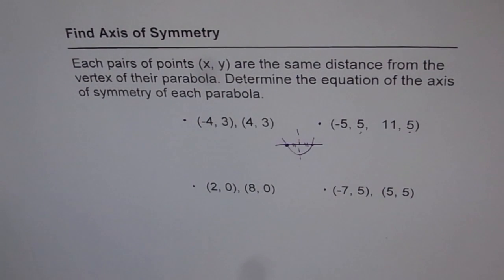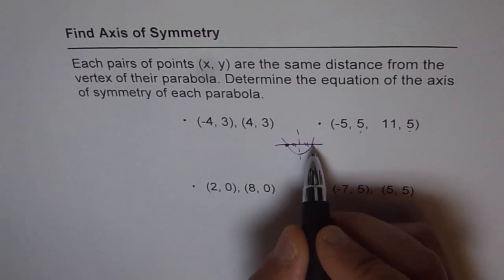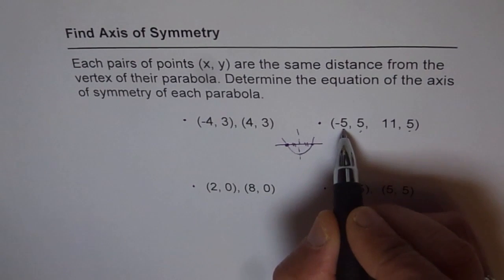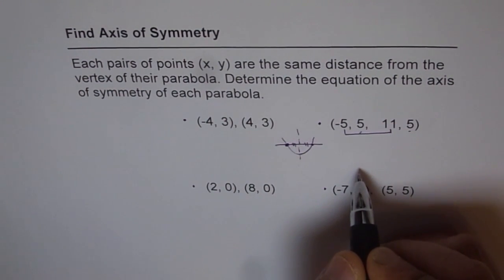So that is what is given to you. And we need to find axis of symmetry. Axis of symmetry is the mean value of the x points. Do you see that?